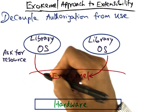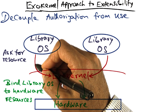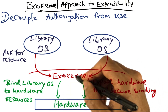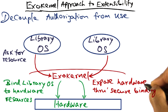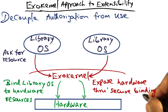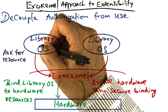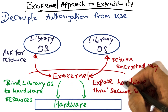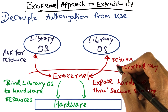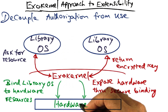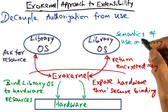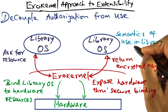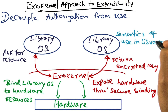The library operating system asks for a resource. ExoKernel will validate the request for the resource from the library and bind the request to the specific hardware resource. In other words, ExoKernel exposes the hardware requested by the library OS by creating a secure binding between the ask and the actual hardware resource. Once ExoKernel has established this binding, it creates an encrypted key for the resource and gives it to the requesting library operating system. Similar to the analogy of a student using lab resources, the semantics of how the resource is going to be used by the library is entirely up to the library.